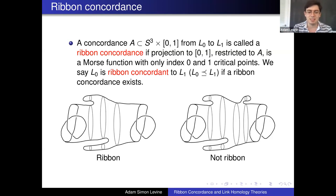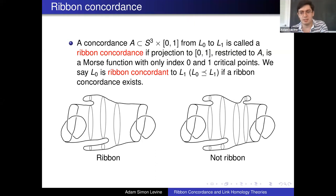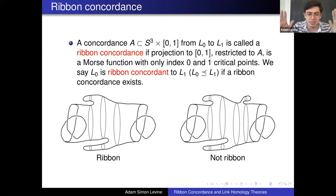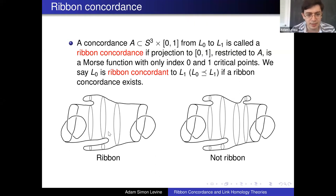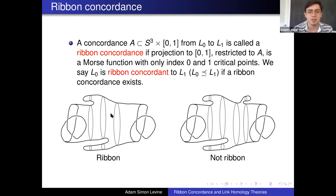To draw a schematic: the time dimension is drawn horizontally from left to right. I'm drawing a funky annulus living in four-space — three-space cross an interval — with knots at the ends. The one on the left is ribbon because, as we go from left to right, it has local minima and saddle points but no local maxima in the interior. The one labeled as not ribbon does have a local maximum. So the Morse function condition precisely forbids local maxima.